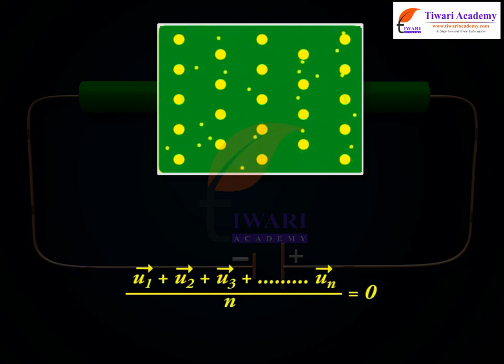That is, u1 vector plus u2 vector plus u3 vector plus so on till un vector by n is equal to 0.